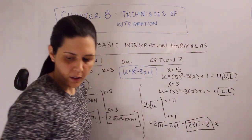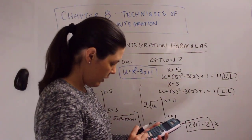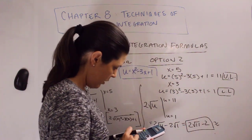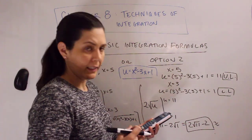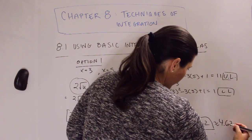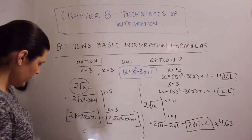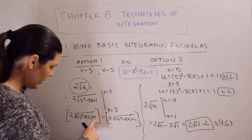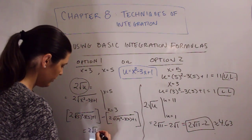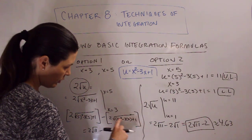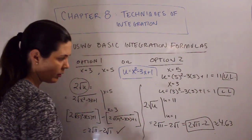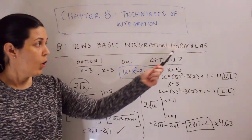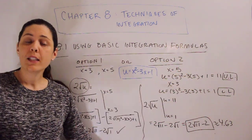Simplifying: 2 times the square root of 11, and the square root of 1 is 1, so minus 2. That's our final answer. Plugging into a calculator, 2 times the square root of 11 minus 2 gives roughly 4.63. The same result happens with option 1 — 25 minus 15 is 10 plus 1 is 11, giving 2 times the square root of 11 minus 2 times the square root of 1. Same answer. So either way you choose is fine.